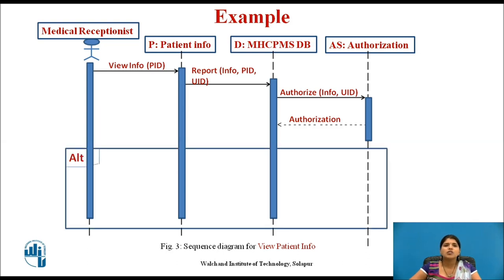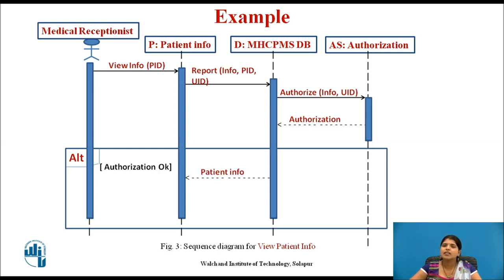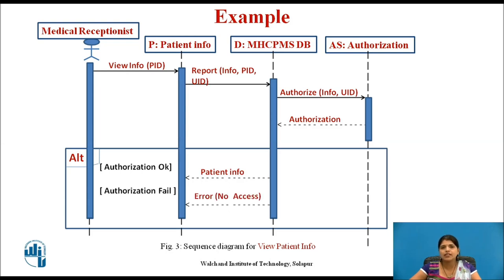A box named ALT is used with the conditions indicated in square brackets. If authorization is OK, then patient information is returned from the database and the form is filled. If authorization fails, then an error message is returned.